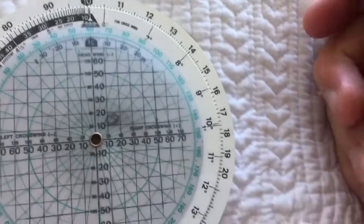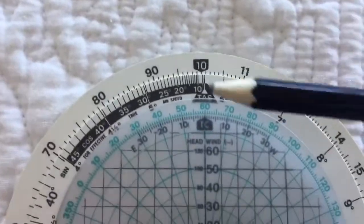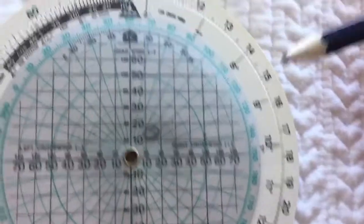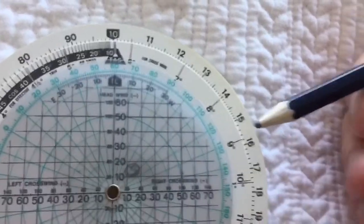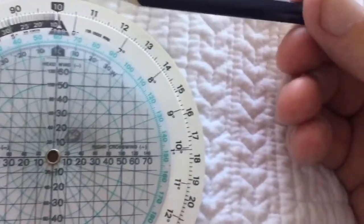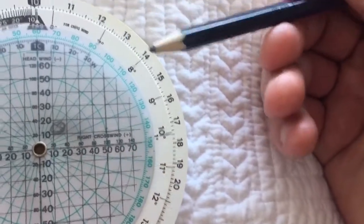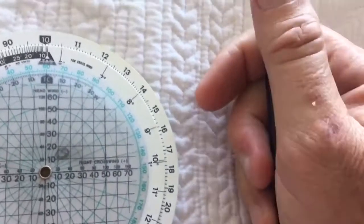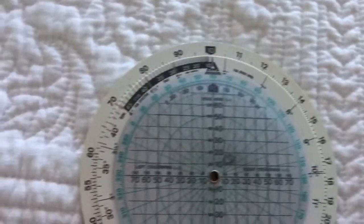So if, for example, we wanted to head 060, we need to adjust that eight and a half degrees. You would need to actually head 068 or 069 so that we don't get blown off track. And that's how to use the wind sight.